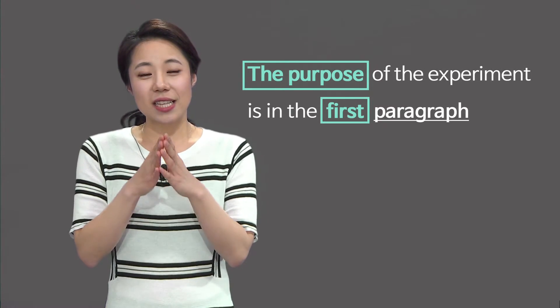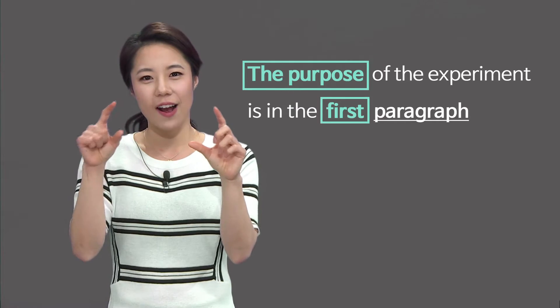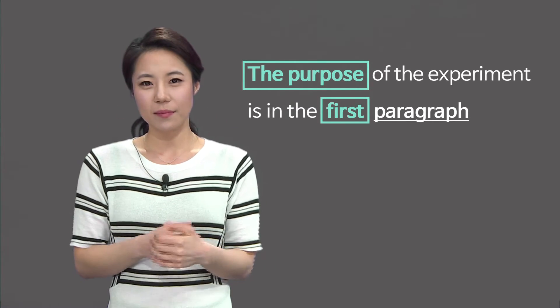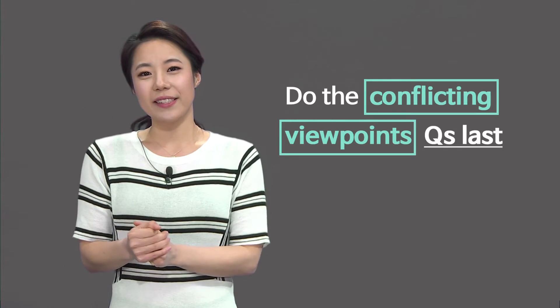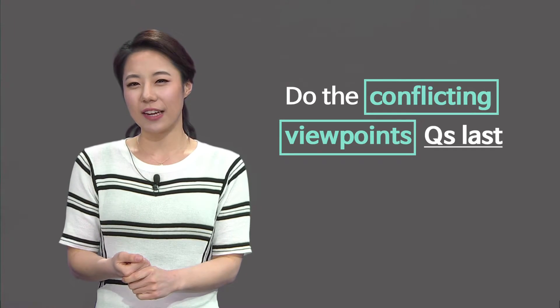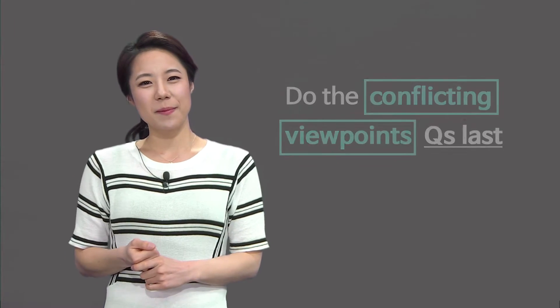Here are things to remember: the purpose of the experiment will be shown in the first paragraph most of the time. ACT science is not really a science test, so do the conflicting viewpoints questions last if you think reading takes extra time. Not making careless mistakes is a key to success.